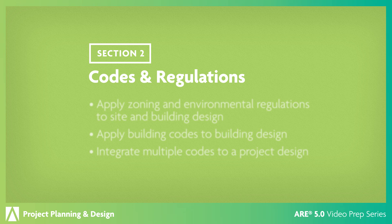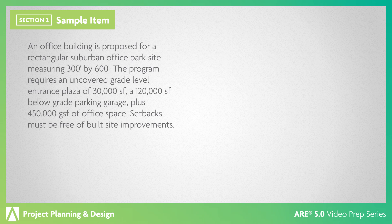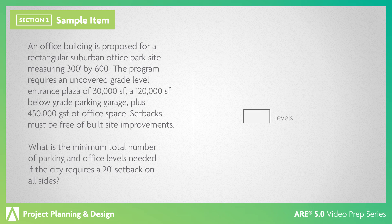In the next section, you'll look at the codes and regulations relevant to the planning phase of a project. Let's look at a sample question. An office building is proposed for a rectangular suburban office park site measuring 300 feet by 600 feet. The program requires an uncovered grade-level entrance plaza of 30,000 square feet, a 120,000 square foot below-grade parking garage, plus 450,000 gross square feet of office space. Setbacks must be free of built site improvements. What is the minimum total number of parking and office levels needed if the city requires a 20-foot setback on all sides?